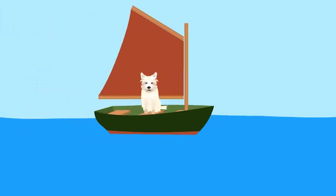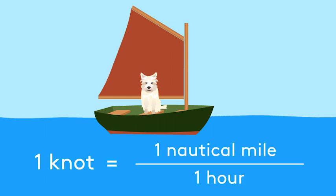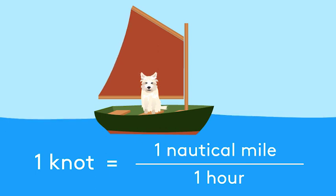Plugging these values into our equation for speed, we now know that Bella ran 2 miles per hour. However, in the context of sailing, we usually use knots when characterizing speed. 1 knot is equal to the distance of 1 nautical mile traveled over 1 hour. Because our distance and time measurements were taken in smaller units, we will have to convert our data to nautical miles instead of feet, and hours instead of seconds.